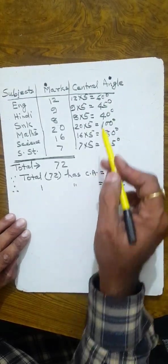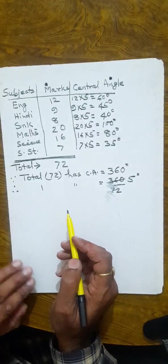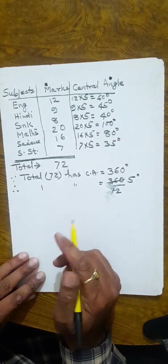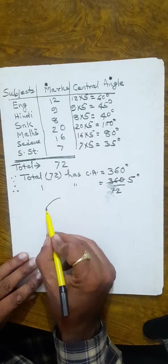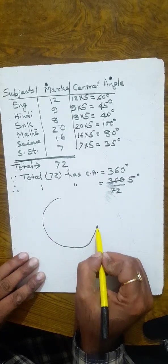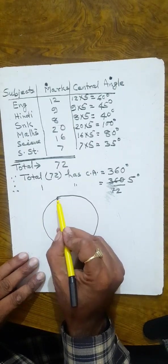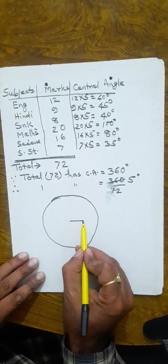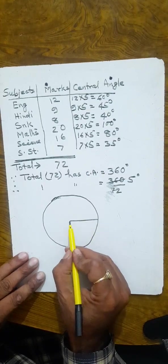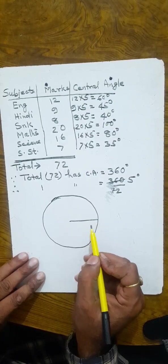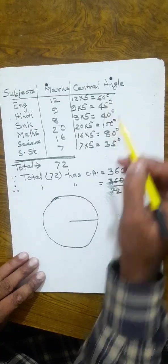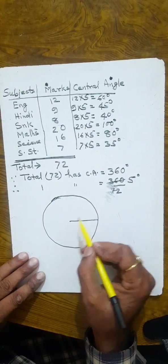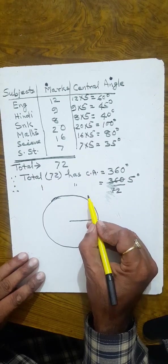Now that the central angles are calculated, we draw a circle of any radius using a compass. Join one radius to the center. The first angle is 60 degrees. We use a protractor, not a compass, to mark the angles. Place the protractor on the radius line at the center and mark 60 degrees.